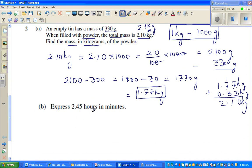2.45 hours in minutes. Now, this is where most of you can go wrong. You should know 1 hour is 60 minutes. So 2 hours would be 60 times 2 is 120 minutes. Now you've got 0.45 hours. 0.45 hours is, you have to multiply by 60, not 100. So this is 0.45 times 60 minutes.